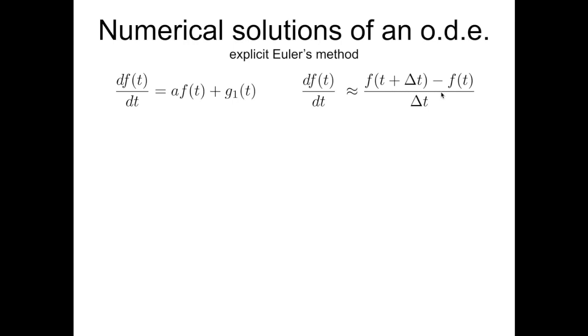So this is clearly wrong, because the derivative is equivalent to the incremental ratio only in the limit of delta t, of this increment, of this discretization in time that goes to zero, goes to infinitesimal values. But if I replace this quantity to the derivative sign, I can write an equation that is relatively easy to solve.